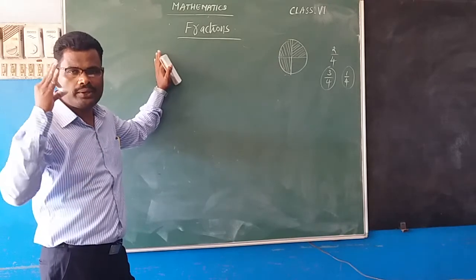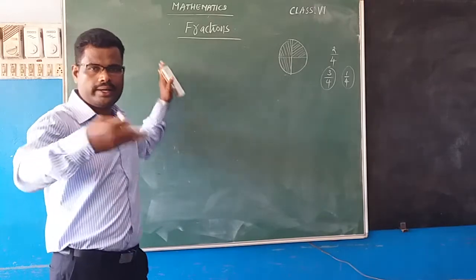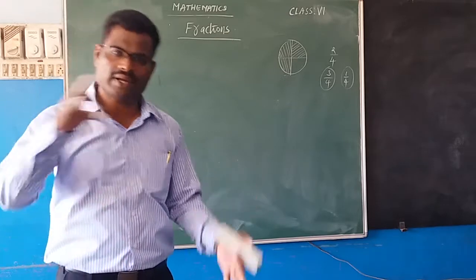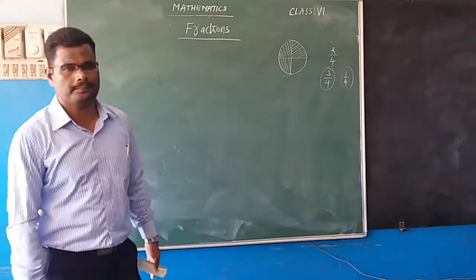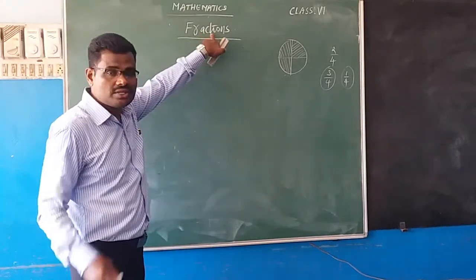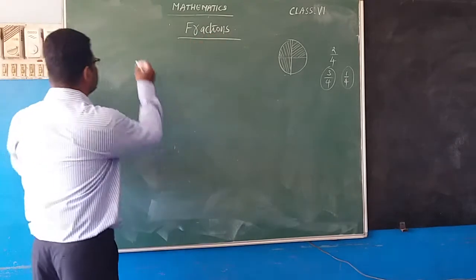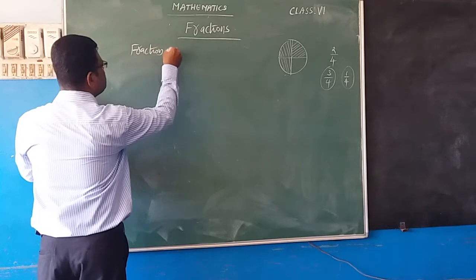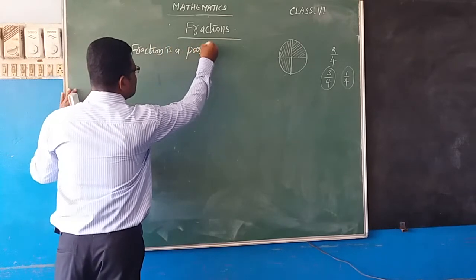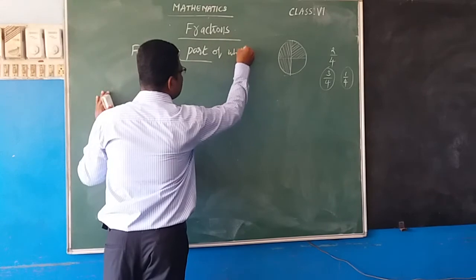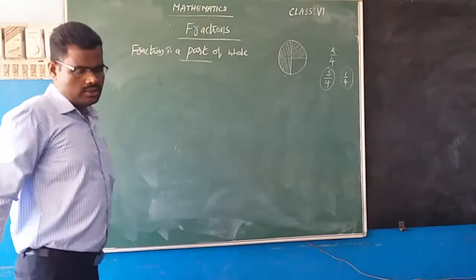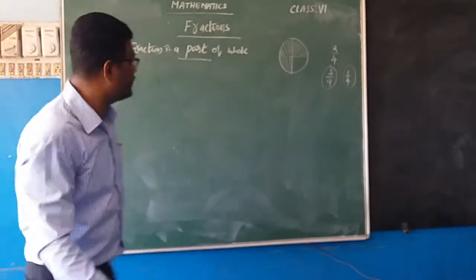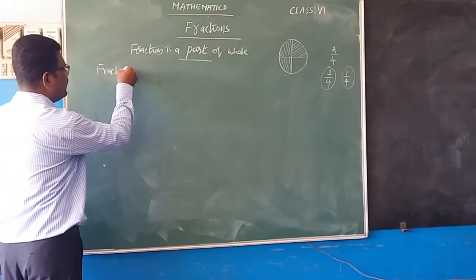Fraction is a part of a whole. Suppose we are dividing an apple into two parts — each part indicates the fraction of the whole thing. So fraction is a part of a whole. Now let us discuss fractions on a number line.